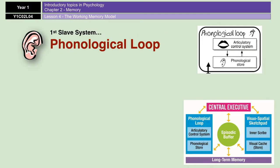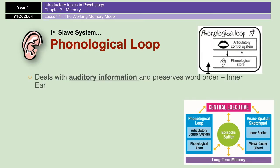The first slave system is the phonological loop. The phonological loop deals with auditory information and also preserves word order. It has a limited capacity. Imagine you're watching your favourite film and then somebody comes in and starts talking to you about their day. You're going to be able to concentrate on one thing or the other, but inevitably you'll either miss a crucial part of your film or miss a crucial part of what that person is telling you. That is a perfect example of how your phonological loop has a limited capacity — two verbal things will stretch it to its full capacity.